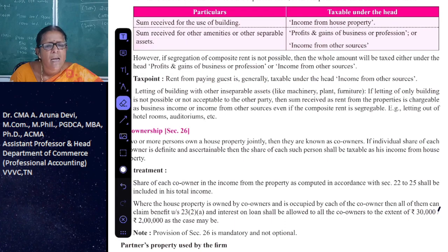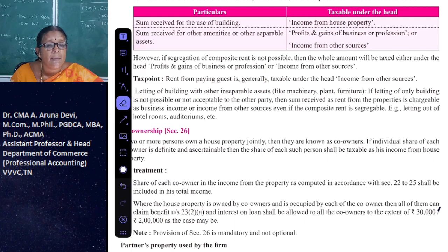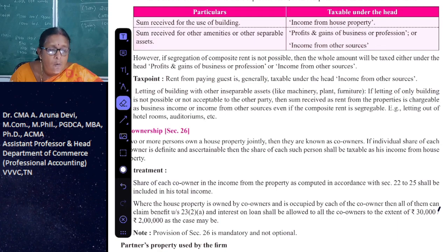If the house property is owned by co-owners and is occupied by each of the co-owners for self-occupation, then all of them can claim the benefit. The interest on loan will be allowed to all the co-owners to the extent of rupees 30,000 or rupees 2 lakhs, as the case may be.